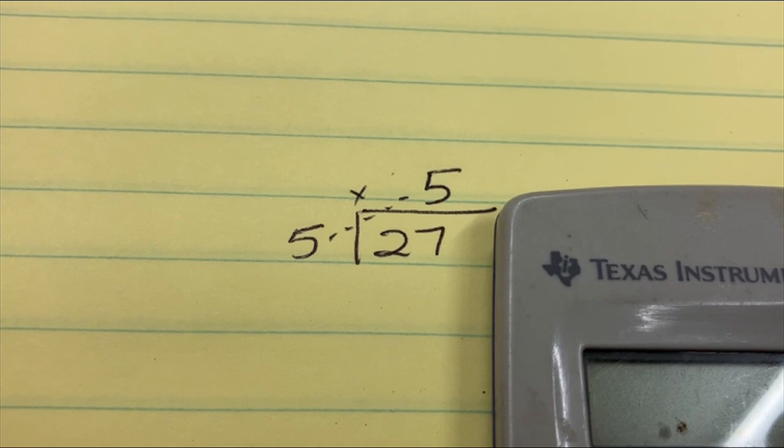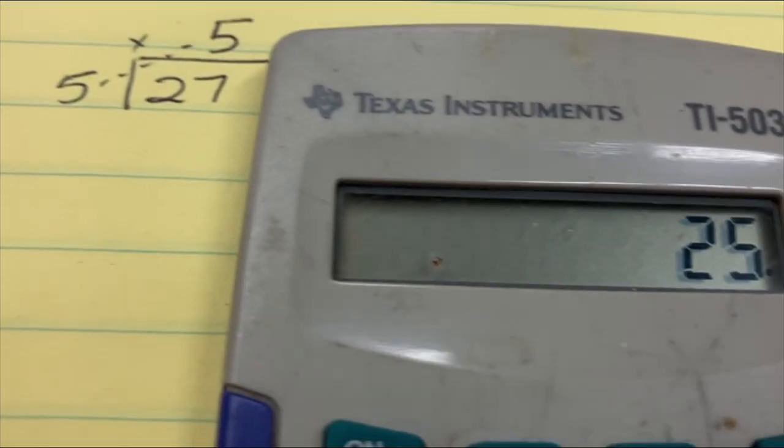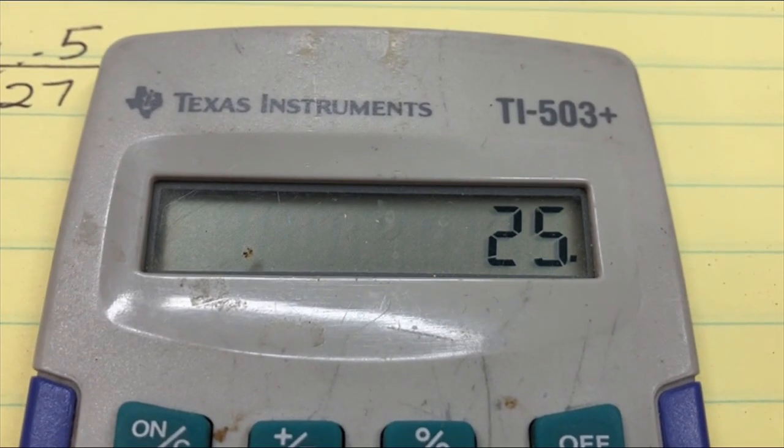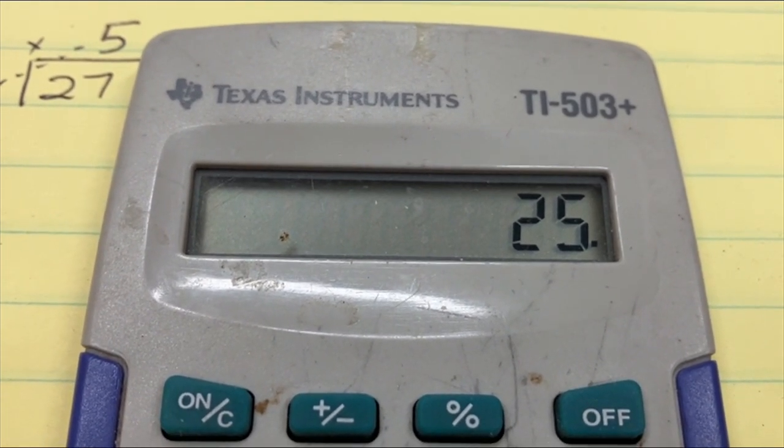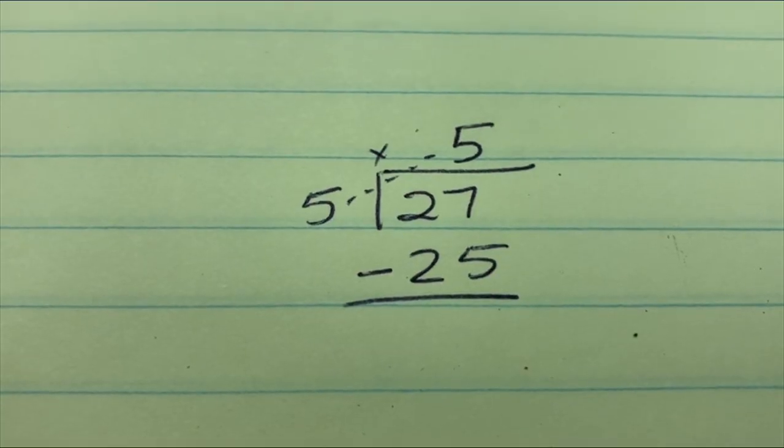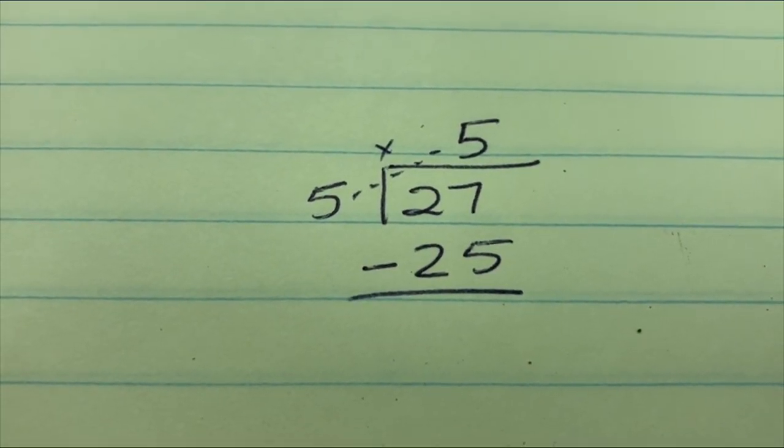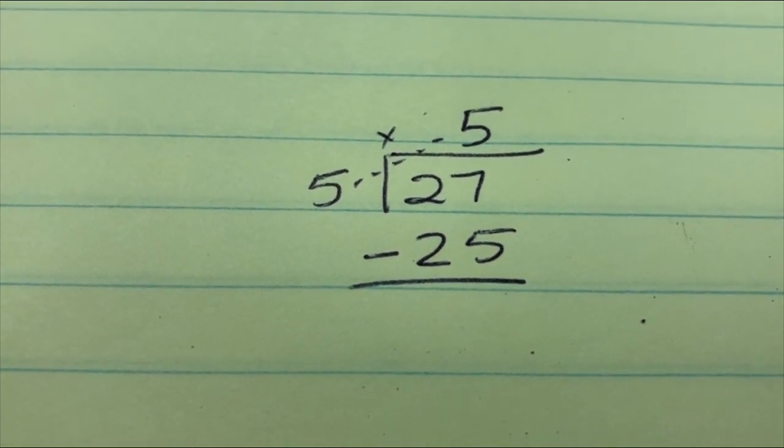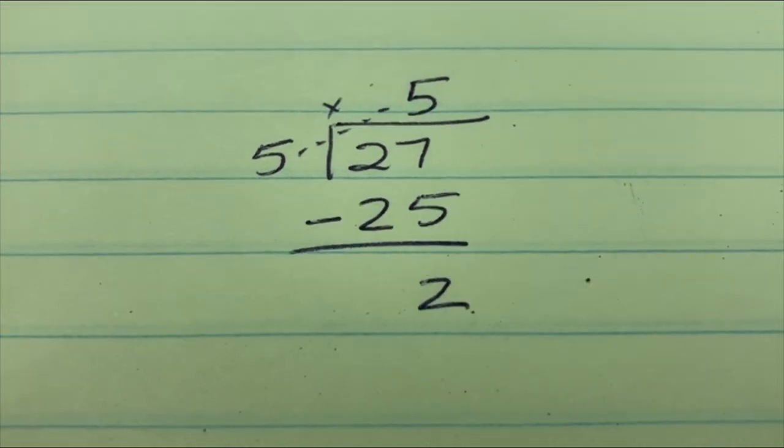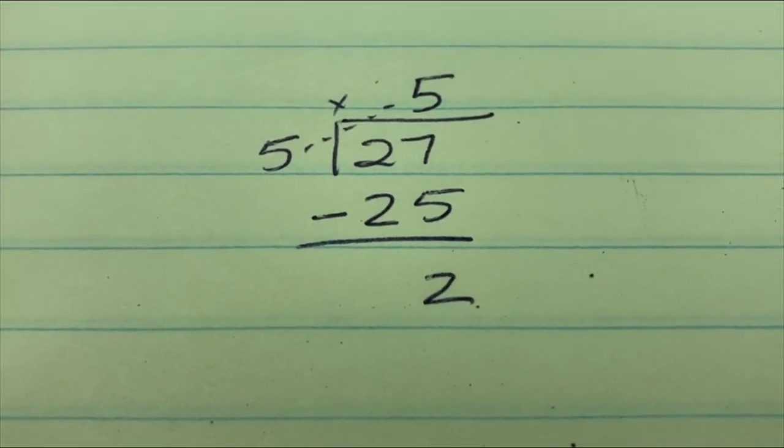So you probably already knew this, but 5 times 5 is 25, but we did it on the calculator just to make sure. Now what are we going to do with that 25? Well, we're going to take that 25 and subtract it from that 27, and I bet you know what number we're going to get. Yep, that's right. We got 2.